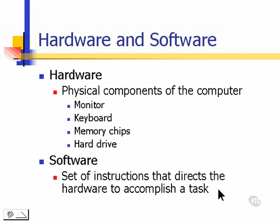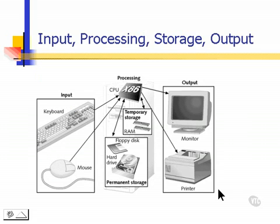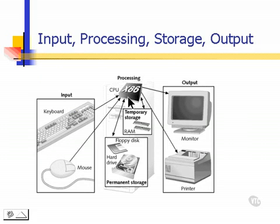Hardware and software work closely together to provide four functions: input, processing, storage, and output. Input is through a keyboard or a mouse; processing, through a CPU; storage, in a permanent storage device like a hard drive or a floppy drive; and finally output, through a monitor or a printer.